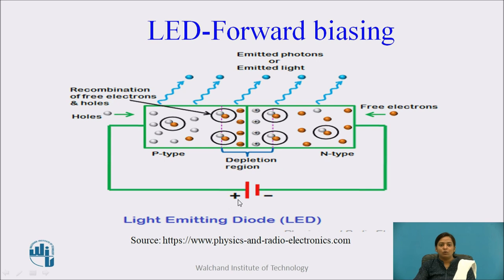Similarly, due to the positive terminal, holes in the P-type semiconductor will repel towards the junction. Some holes will combine with the electrons present at the depletion region, and some holes will cross the junction and recombine with the electrons present in the N-type semiconductor. Whenever hole-electron recombination takes place, photons are emitted, that is, light is emitted.